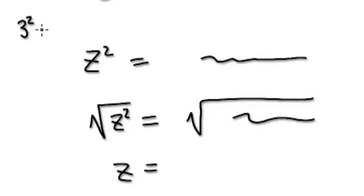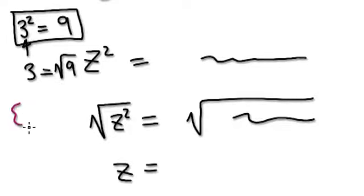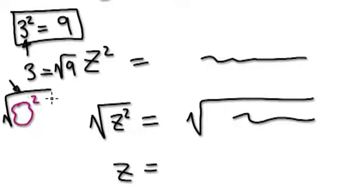If you look at this: 3 squared is 9, so if someone gives you that, and you square root both sides, it basically means this gives you 3. Because if you have a bubble squared and then you square root that thing, the square root is the opposite of the square — basically they're inverses of each other, so they cancel each other, leaving you just the bubble.